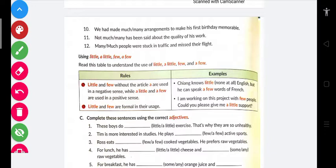Read this table to understand the use of little, a little, few, and a few. Look at the rules: little and few without the article 'a' are used in a negative sense, while a little and a few are used in a positive sense. Let's try to understand with an example. Chang knows little English - little English means negligible English, negative sense. He can speak a few words of French - this is positive sense, he can speak a few words of French.